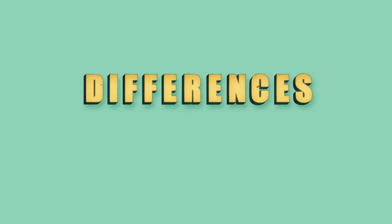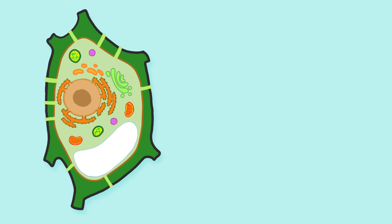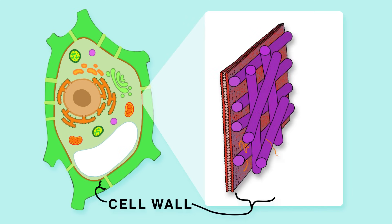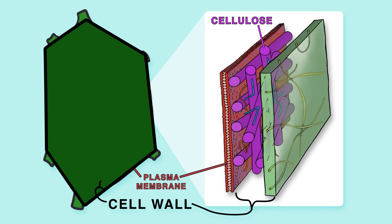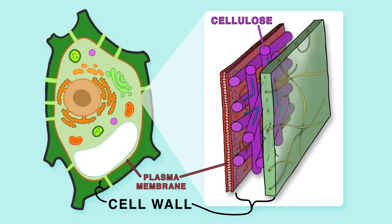Now let's get to the differences between plant and animal cells. One major difference is that plant cells have a rigid cell wall around their plasma membrane. It is composed of cellulose, providing additional stability and protection. As a result, plant cells have fixed angular shapes, while animal cells are mostly round and irregular.